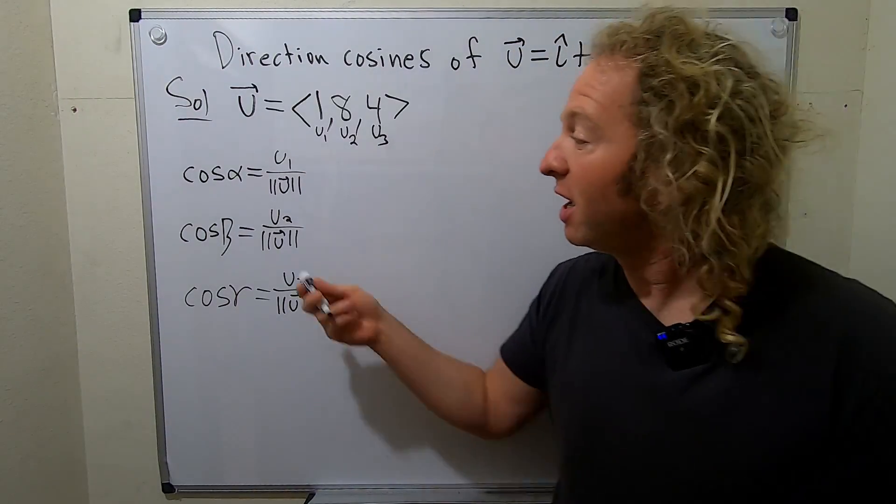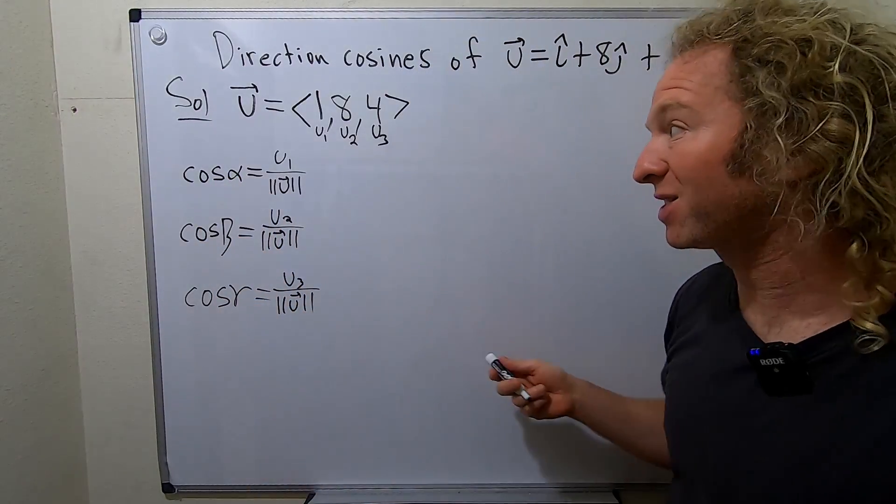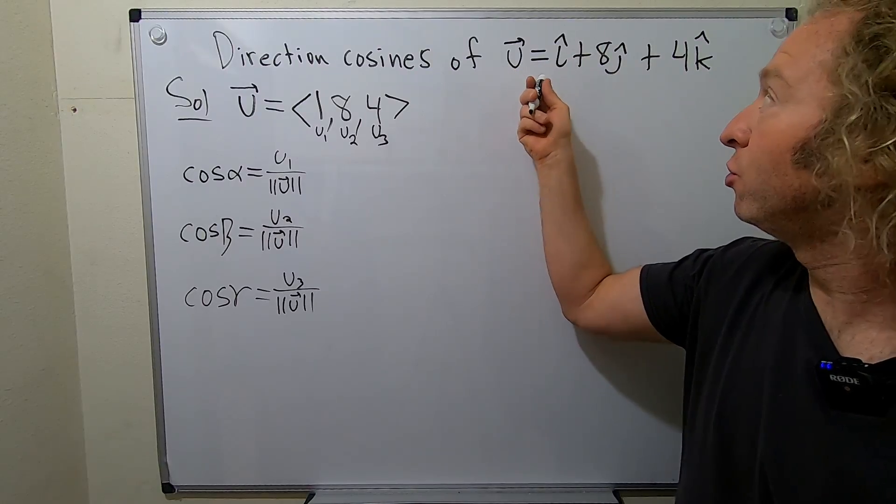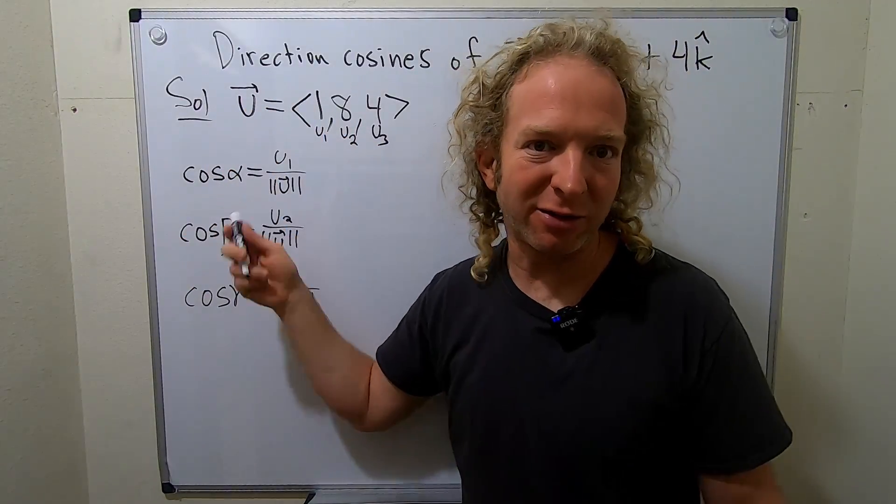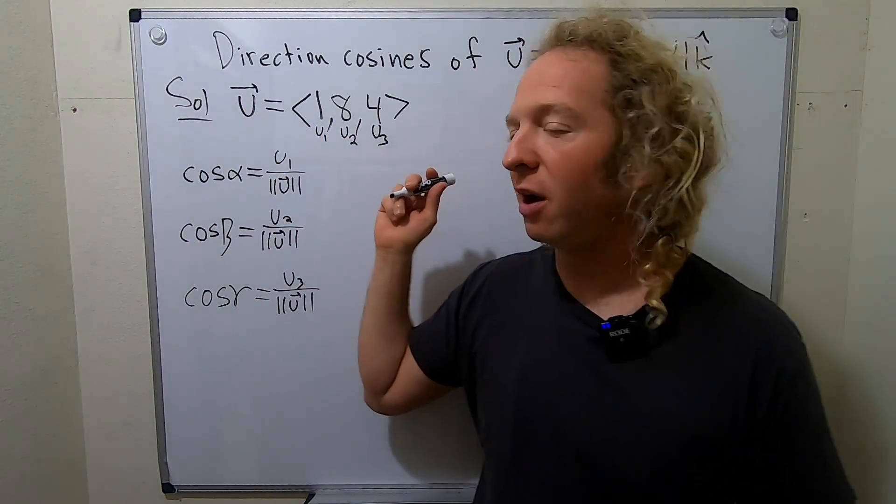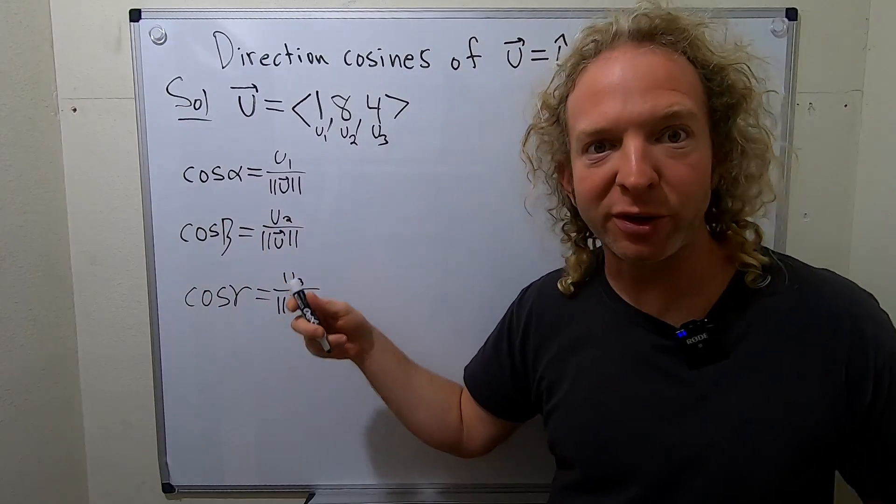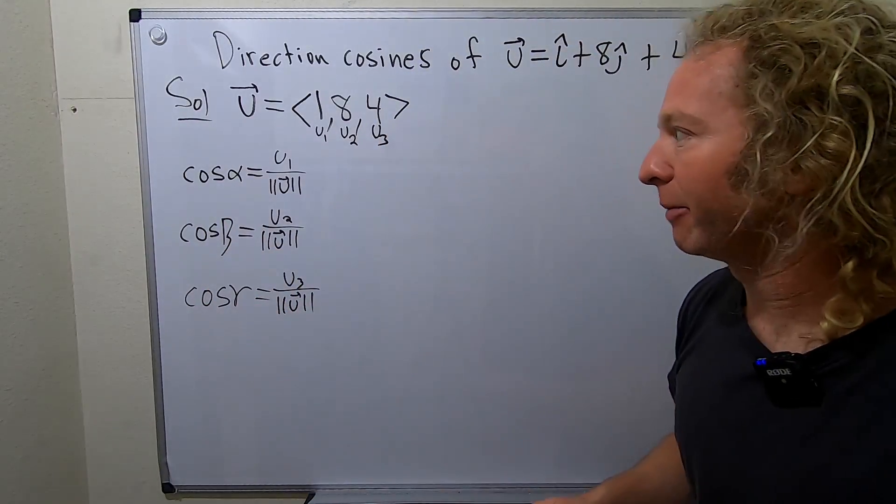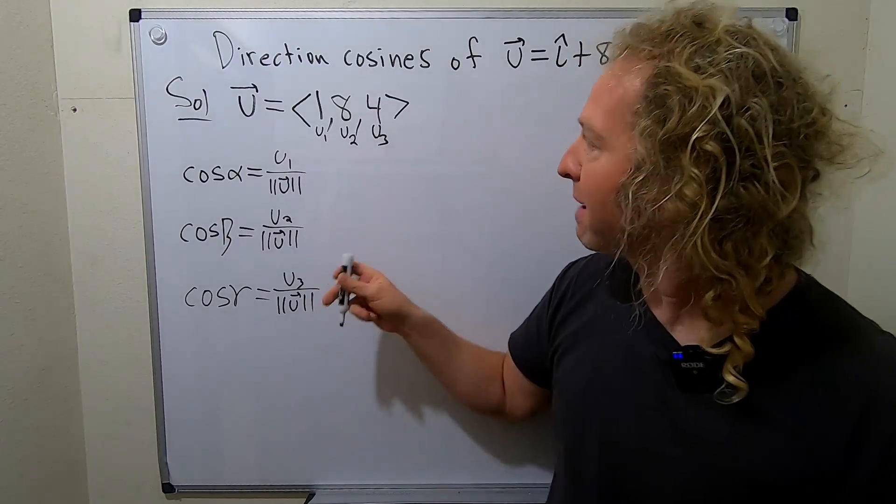The alpha, the beta, and the gamma are called direction angles. They're the angles between u and each of the corresponding unit vectors. So, like the angle between u and i hat, the angle between u and j hat, the angle between u and k hat. That would be gamma. So we just have to find the magnitude of u.